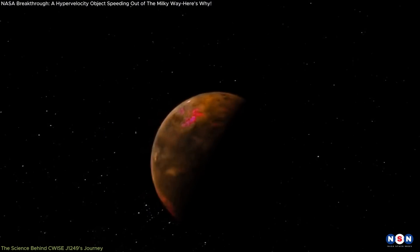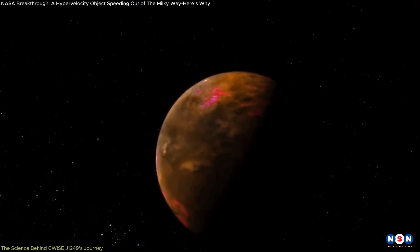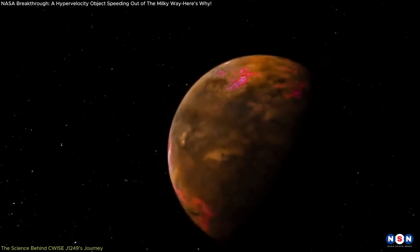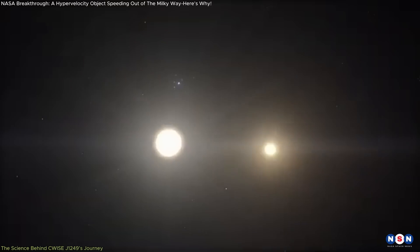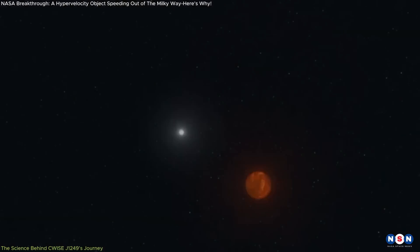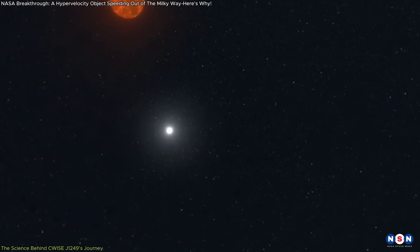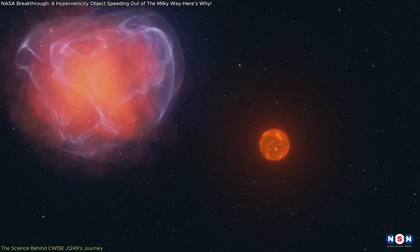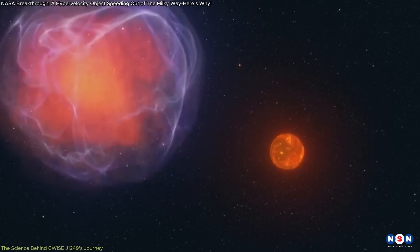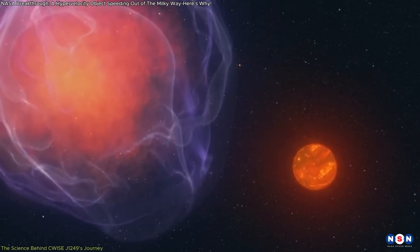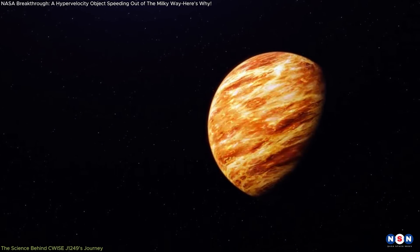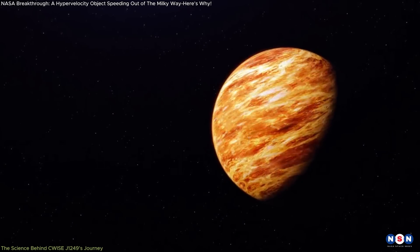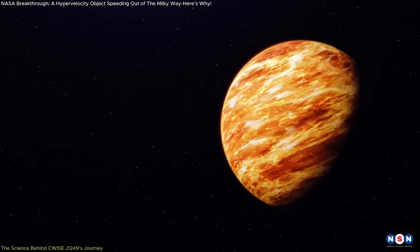There are several hypotheses as to how this object gained such velocity. One possibility is that it was part of a binary system in which one of the stars was a white dwarf. As the white dwarf accumulated mass from its companion, it eventually exploded in a type 1A supernova, launching the companion into space at an incredible speed. This scenario is supported by the fact that this object has a low metal content, suggesting that it is an older star formed in a metal-poor environment.